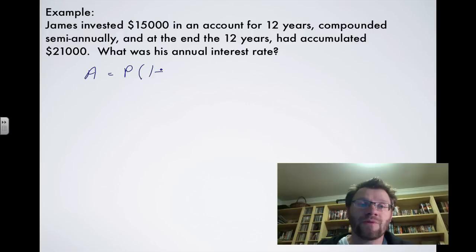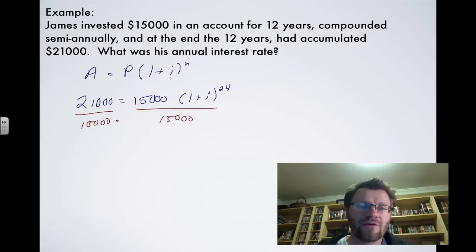We know that A is 21,000. We know that P is 15,000. We do not know the interest rate, so we'll leave it as I. And we know that the value for N will be semi-annually, so that means we're going to take our number, multiply it by 2, and it's 12 years, so that would be a 24 there. So to isolate, we're isolating I, because that's what we're looking for. We're going to divide both sides by 15,000.